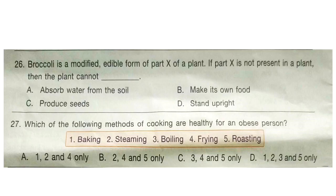Question 26: Broccoli is a modified edible form of part X of a plant. If part X is not present in a plant, then the plant cannot dash. The correct answer is option C — Produce seeds. Broccoli is a modified edible stem of a plant.